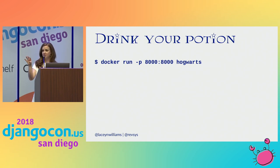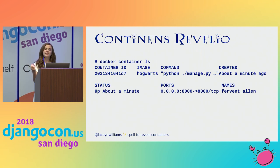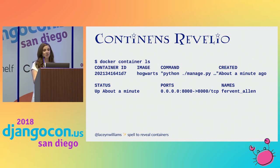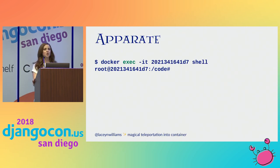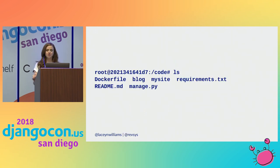Right now we don't have any containers running because we've built our image but haven't done anything with it. In order to do something with that image, we run docker run -p 8000:8000 hogwarts — that will execute everything we had in that image and actually start making a copy of the container. If we run docker container ls again, we will see this container that we've created — we can see the image it's based on, the command that it's running, and some other metadata.